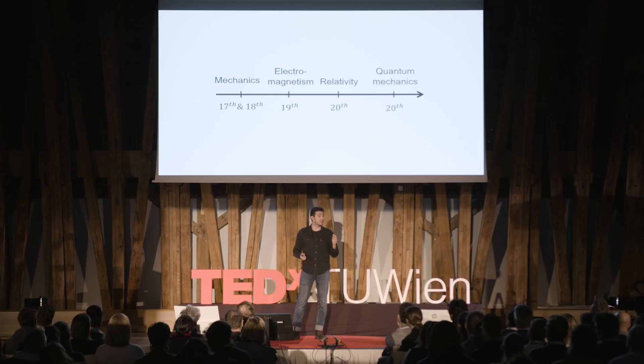Apart from Einstein's groundbreaking theory of relativity, the early 20th century saw a proper revolution in physics. Its magnitude so big that all lines of thought that came before it are collectively referred to by physicists as classical physics. The new lines of thought were called quantum mechanics.